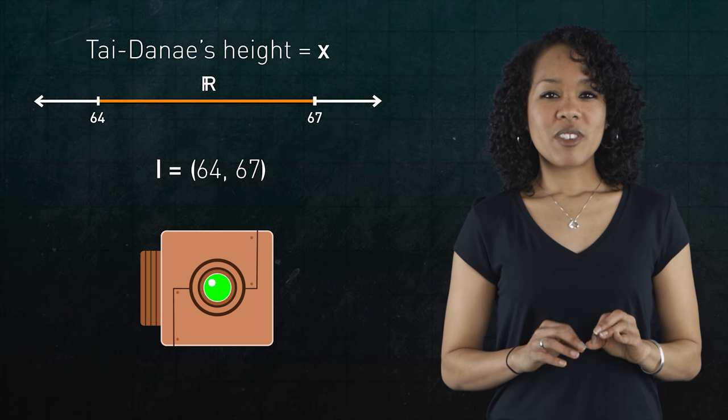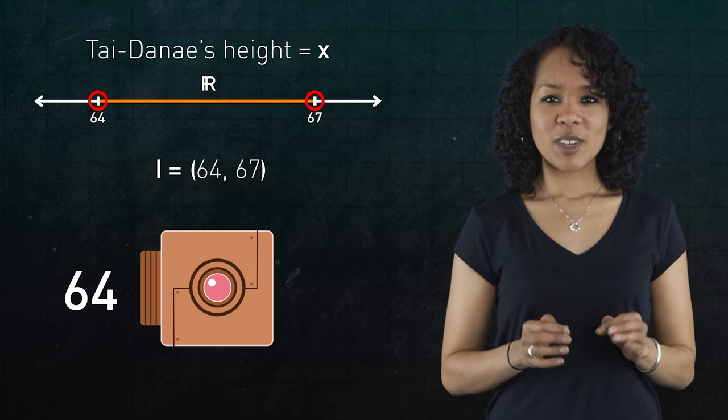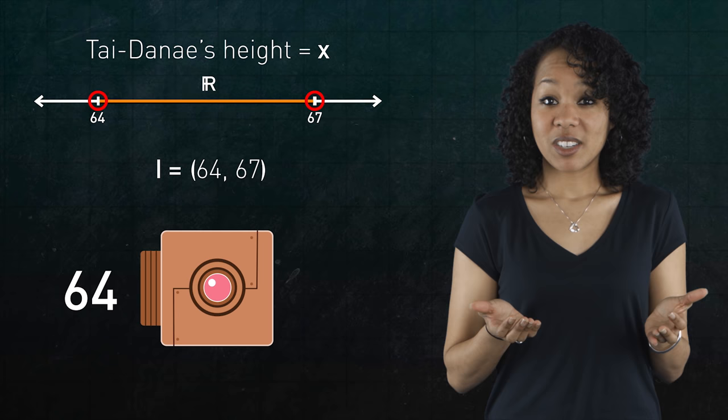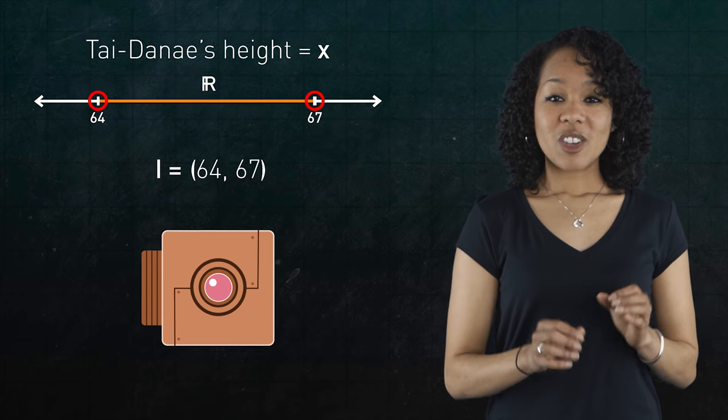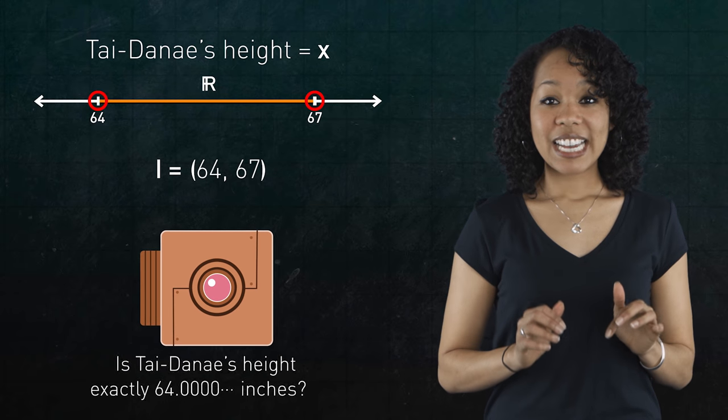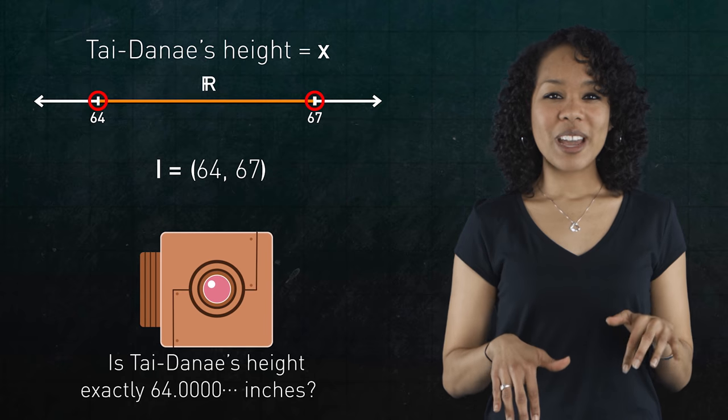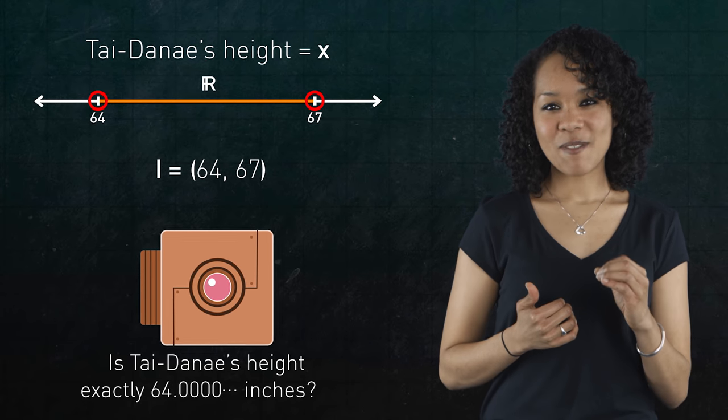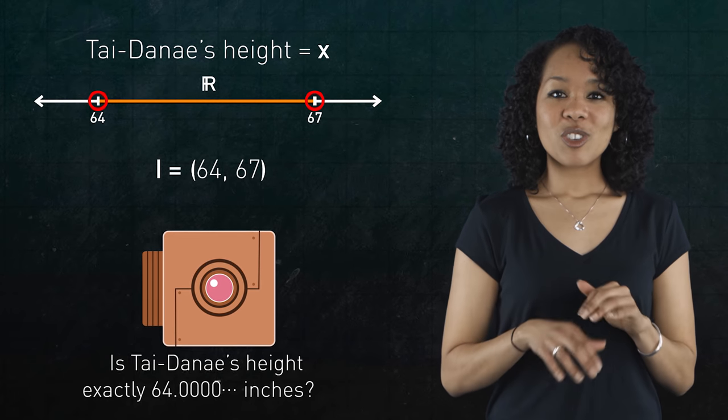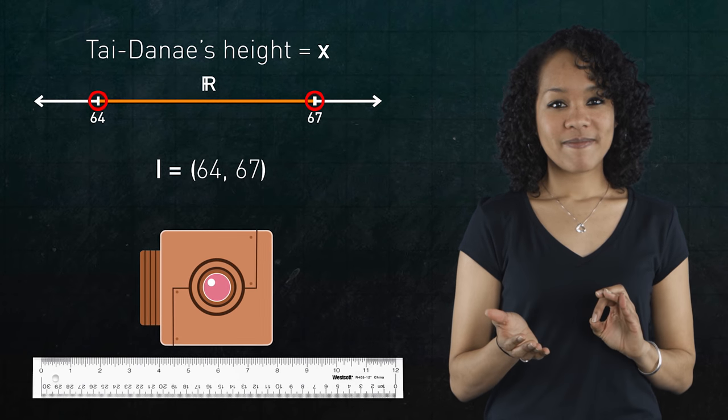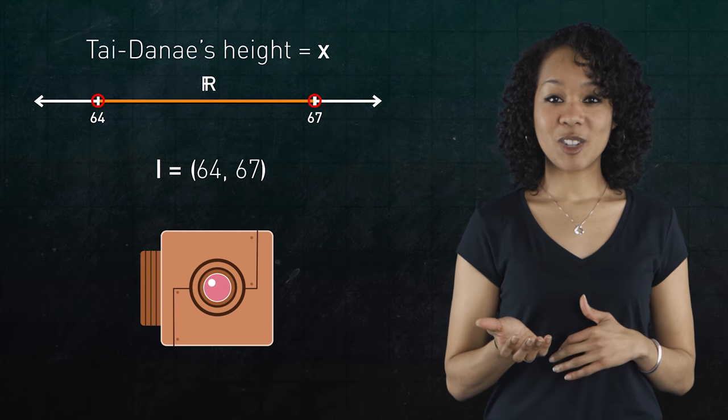But you might be wondering, why not include the endpoints 64 and 67? Won't the machine terminate if we input the number 64? Well, think about it. If you feed 64 into the machine, you're asking the question, is Tai Diné exactly 64 inches tall? But there's no way you can ever be sure that I am exactly 64.0000 and so on inches tall. There's no ruler with that much precision. The endpoints 64 and 67 are not verifiable, so let's not include them.